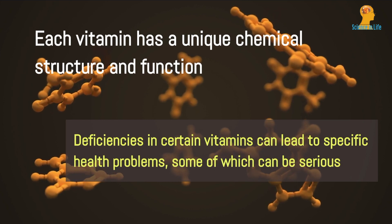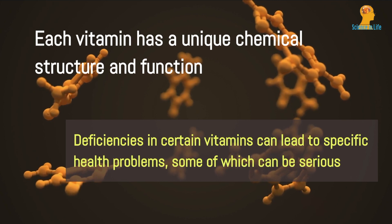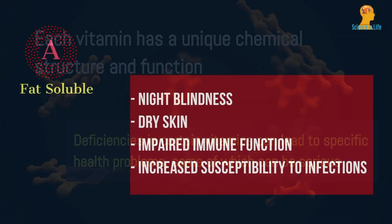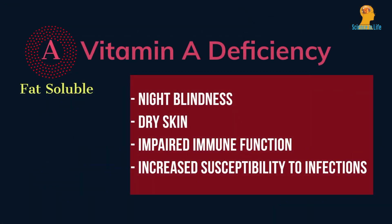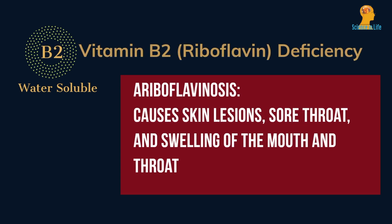Here are some examples of diseases caused by vitamin deficiencies. Deficiency in vitamin A can cause night blindness, dry skin, impaired immune function, and increased susceptibility to infections. Deficiency in vitamin B1 (thiamine) causes beriberi, a condition that can cause neurological and cardiovascular symptoms. Deficiency in vitamin B2 (riboflavin) causes ariboflavinosis, which can cause skin lesions, sore throat, and swelling of the mouth and throat.